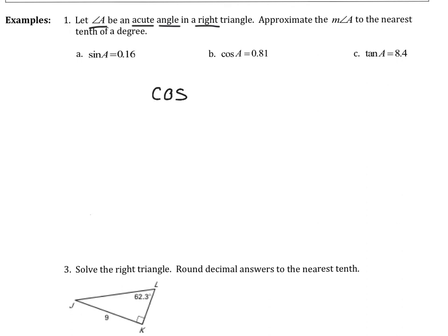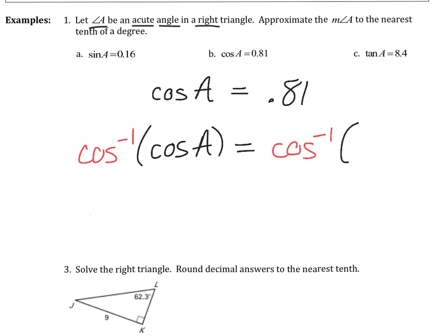So this next example is going to be set up the same way, except now I'm using cosine instead. So in order to get rid of that cosine, I'm going to use cosine inverse. I'm going to apply that to both sides. So I'm going to do the cosine inverse of 0.81. So remember, that's my ratio just changed into a decimal. And that should give me the measure of angle A, which is 35.9 degrees.